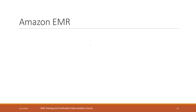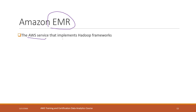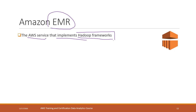On AWS, Hadoop is an open, free data framework that anyone can implement on their local environment, but it can be a little complicated. Amazon EMR is the AWS service that can implement the Hadoop framework for you, so you can build up your own Hadoop framework with just a few single clicks and they will set up the Hadoop server for you.